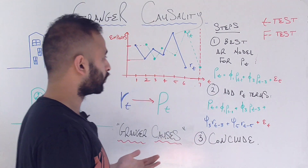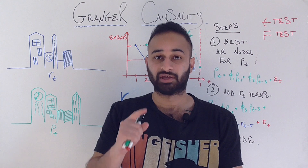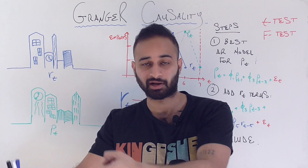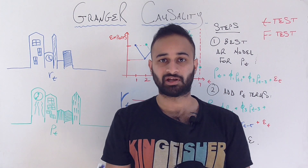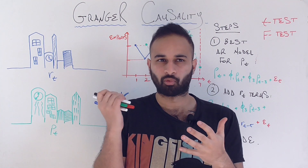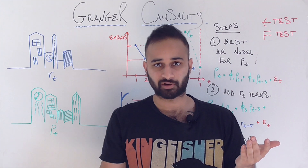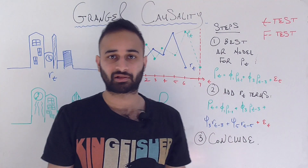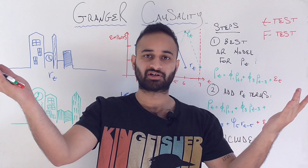So that's Granger causality in a nutshell. The main points to take away are: first, the intuition that one time series can help predict another — that's the idea of Granger causality. Second, Granger causality is not true causality; it's a more watered-down but still helpful version of thinking about one thing causing another. And third, the three steps you would use to mathematically determine whether one time series Granger causes a different time series.